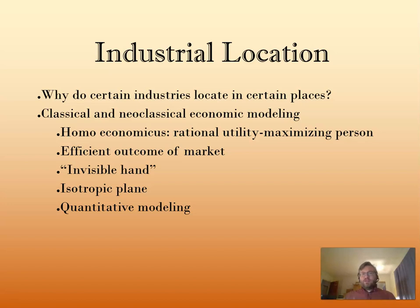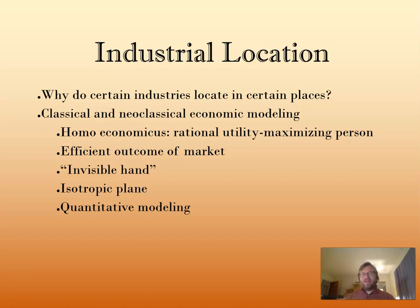Those three assumptions are common throughout classical and neoclassical economics: homo economicus, seeking this efficient market outcome, and the invisible hand — that markets are going to produce optimal outcomes even without anybody overseeing them. When we bring these modeling approaches into the geographical context, we try to add geographical space as a dimension of our economy.